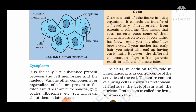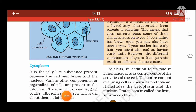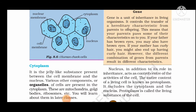The gene is a unit of inherited characteristics in a living organism, responsible for traits such as brown color or curly hair passed from parents to children.